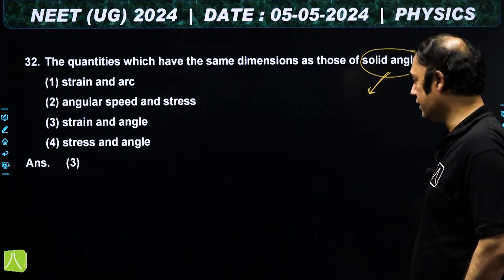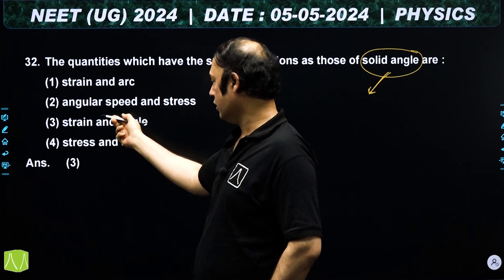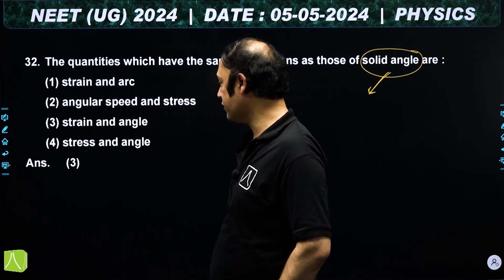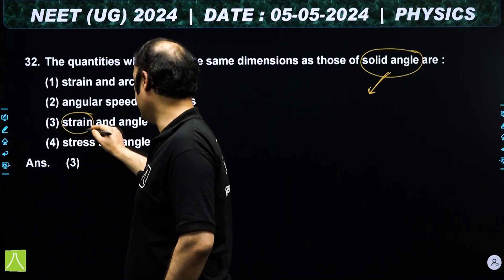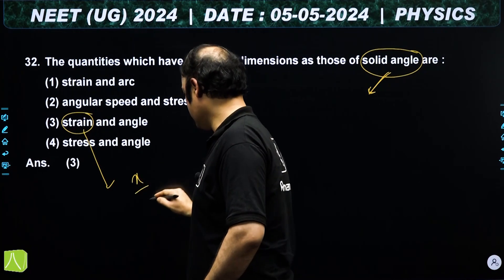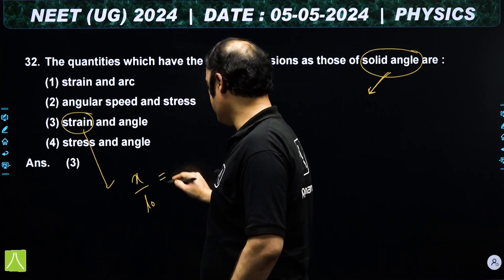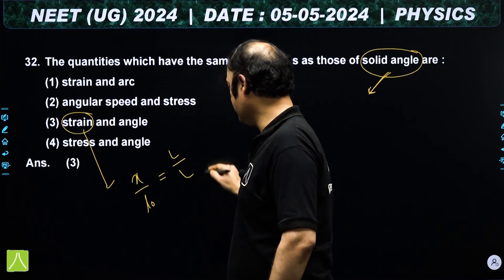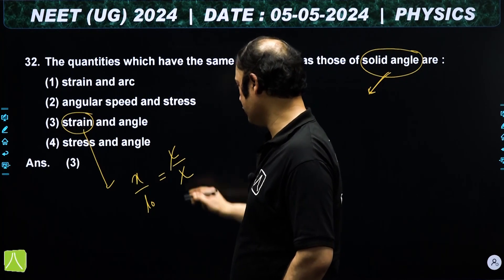So if solid angle is dimensionless, we see which quantity is also dimensionless. Strain is dimensionless: it is change in length over initial length, both have dimension L, so they cancel — strain is dimensionless.